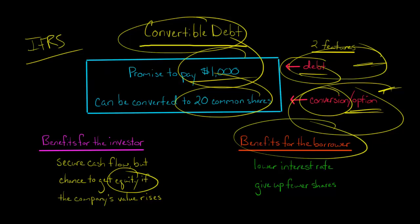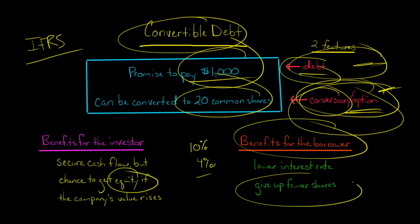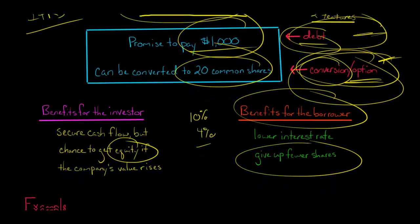Now the benefits for the borrower — the company issuing the debt — is that they're going to get a lower interest rate. Instead of maybe normally paying 10% interest, they might end up paying 4% interest because of that conversion feature, so they're getting a lower cost of borrowing. And if the investor does end up converting and getting shares of stock, the company is giving up fewer shares than they would have if they had just straight up raised all the money with a straight equity issuance.